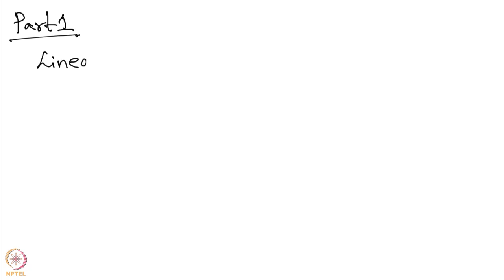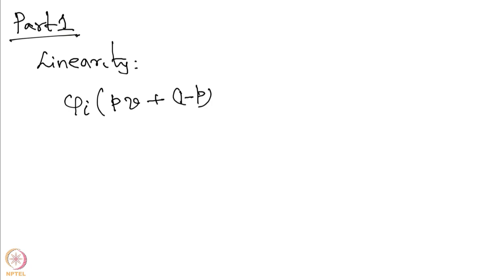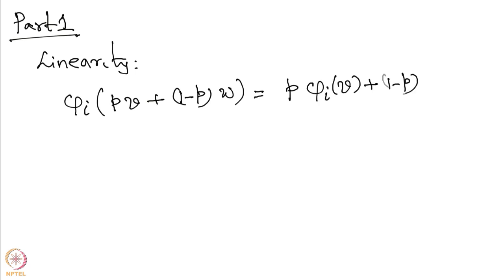We start with linearity. What we need to show is that phi_i of (pv + (1-p)w), where v and w are two cooperative games and p is a number between 0 and 1, equals p times phi_i(v) plus (1-p) times phi_i(w).